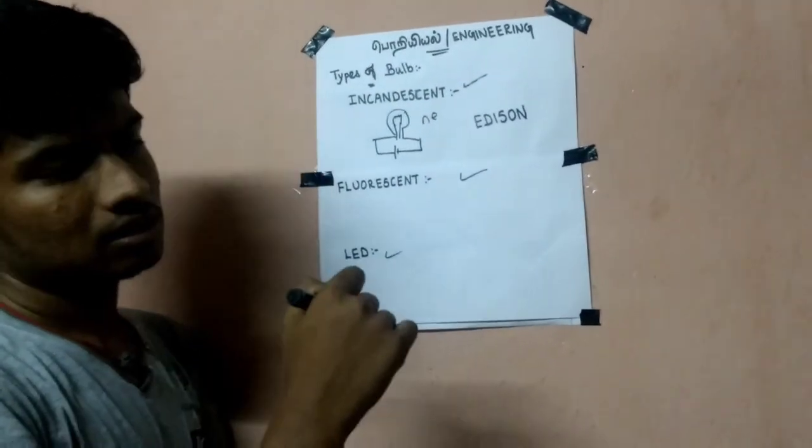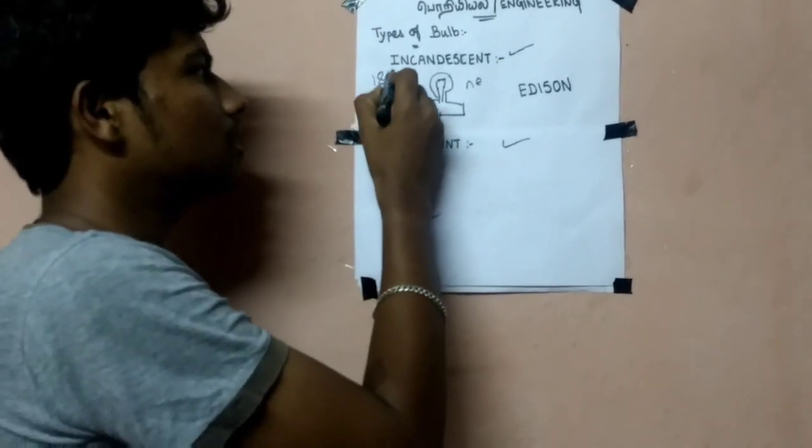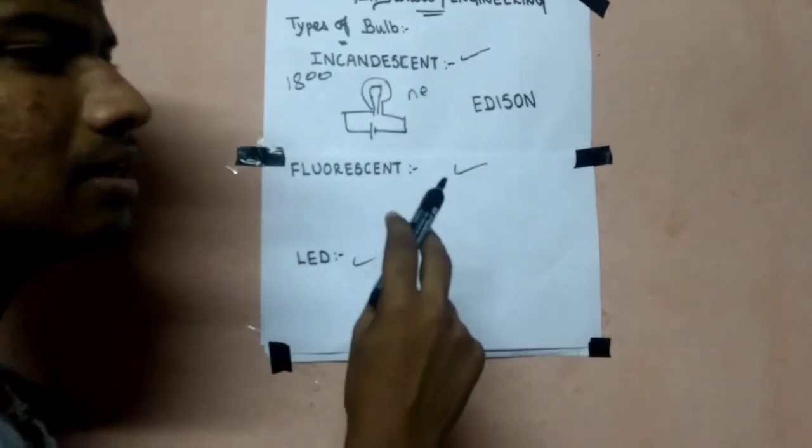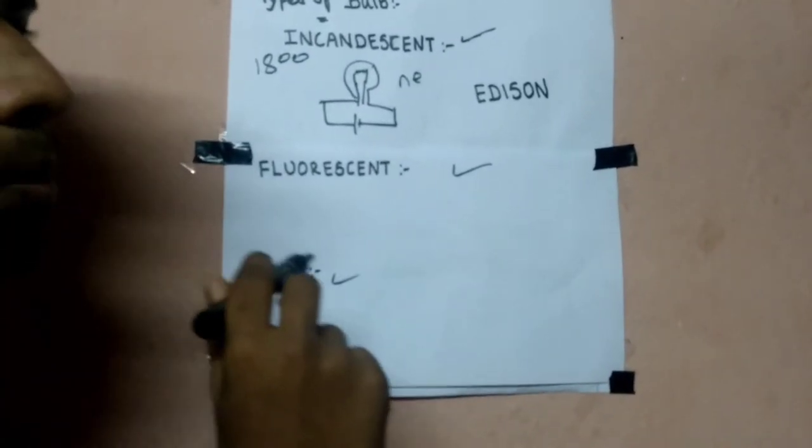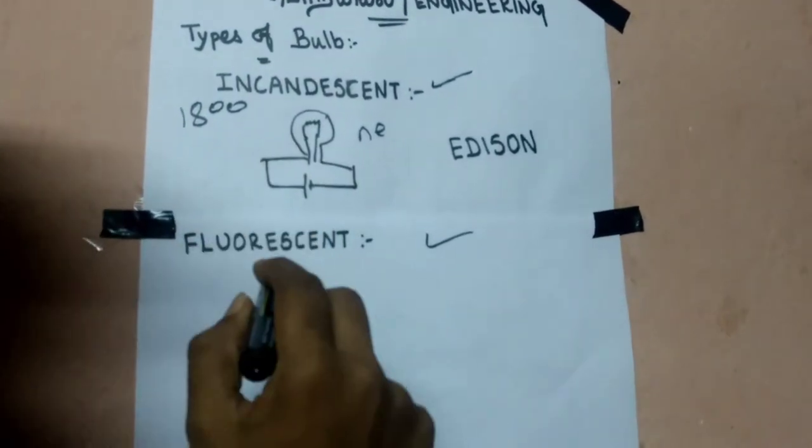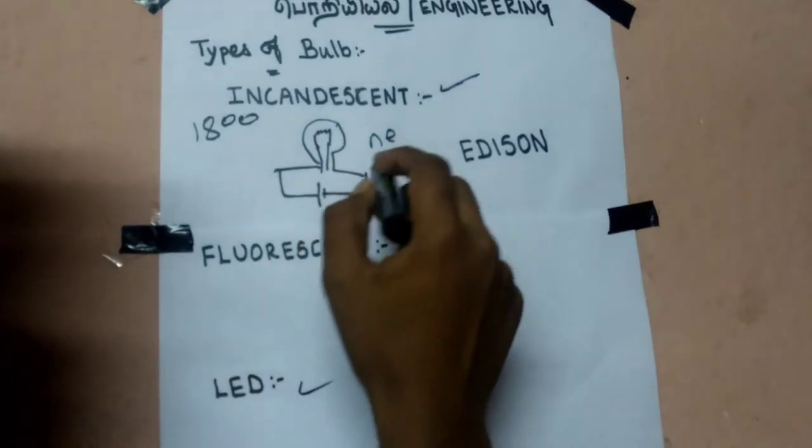Now, the filament was originally carbon, but the engineer replaced carbon with tungsten. The tungsten has a much longer lifetime, so this bulb will last longer.